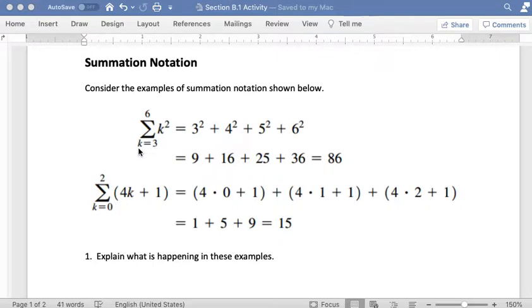We see that we have k equals a number at the bottom of the sigma, and then we have another number at the top of the sigma, and then we have this k squared. So as you look at this, you can kind of make sense of what's happening here. What we are doing is we are starting with the bottom number, 3 in this case and 0 in this case, and we are plugging it into the formula.